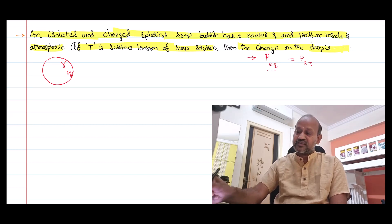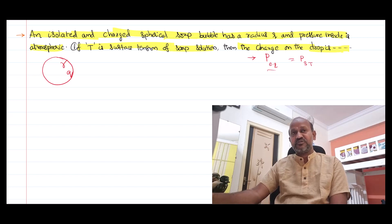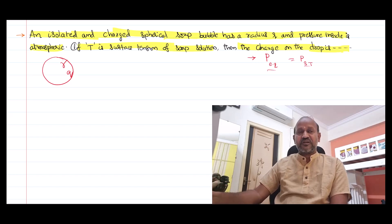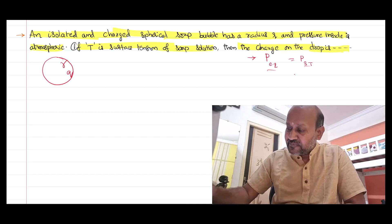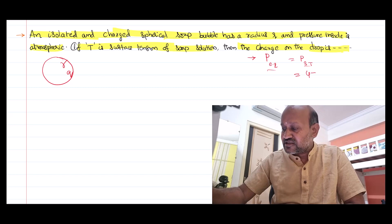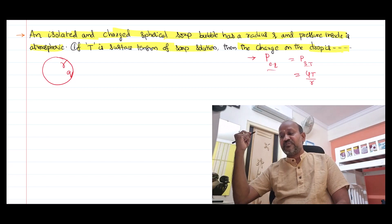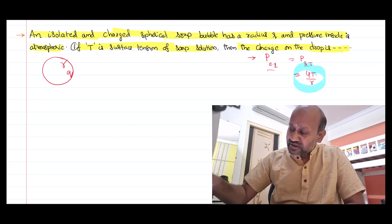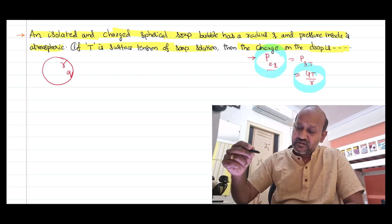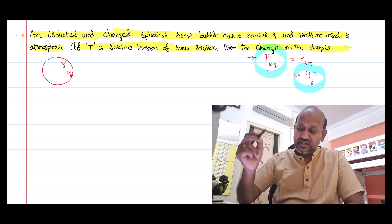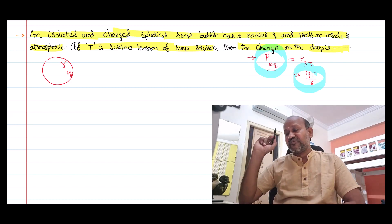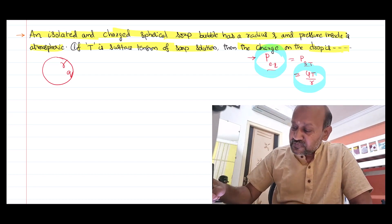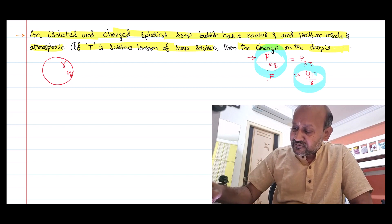Our aim is to calculate the excess pressure in the bubble due to the electric charge. We already know the formula for the excess pressure due to surface tension in a soap bubble: it is 4T divided by R, where R is the radius and T is the surface tension. The unknown term is the excess pressure developed due to electric intensity. The formula for excess pressure is force divided by area.